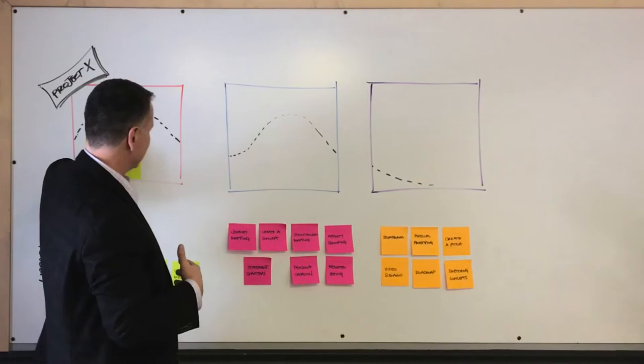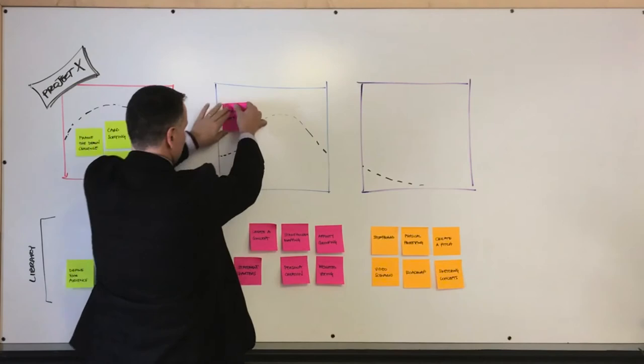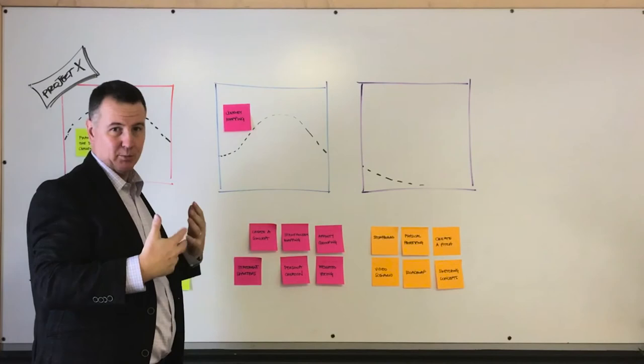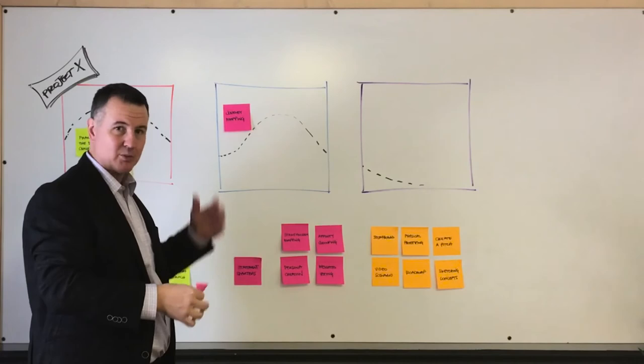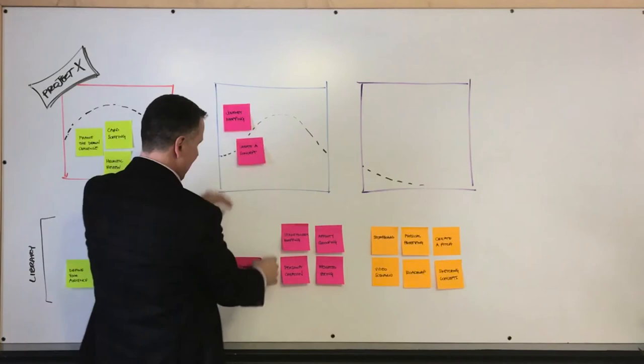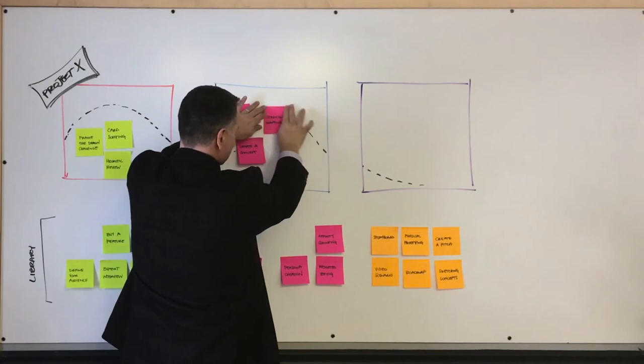You might then synthesize that information and try to summarize that information using other techniques, one being something like journey mapping, so plotting different user types over time, their interactions with your product and service to understand what some of the things that are working, current pain points and opportunities might be, as well as a competitive mapping and comparison. You might create concepts based on that, you might have some statement starters, you might do some stakeholder mapping to understand relationships of people, and you might create personas.